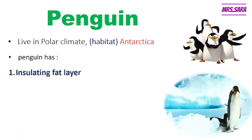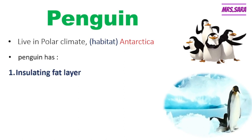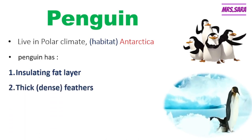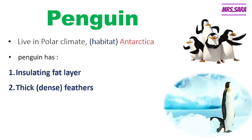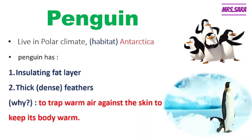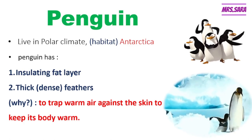So how does the penguin adapt and survive in this very cold place, Antarctica? Number one, the penguin has an insulating fat layer — a fat layer that insulates the cold climate from the body. Also, it has thick, dense feathers to protect the body and to trap warm air against the skin to keep its body warm. So when asked why the penguin has thick feathers and an insulating fat layer, the answer is: to trap warm air against the skin to keep its body warm.